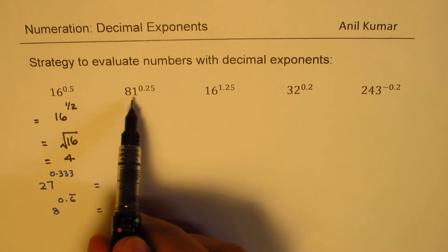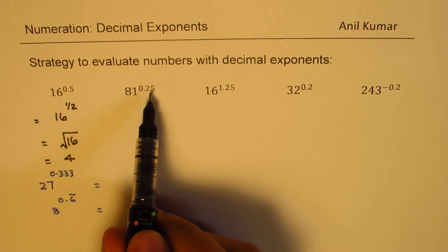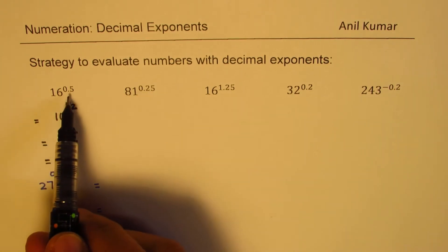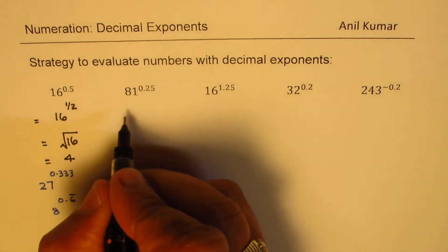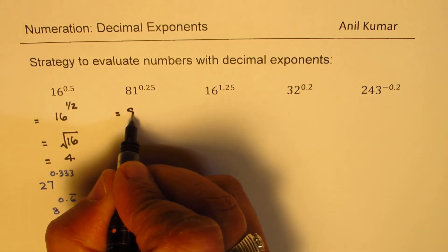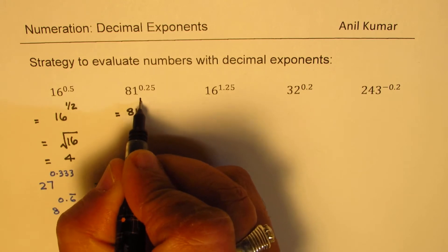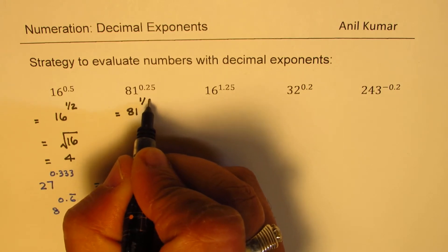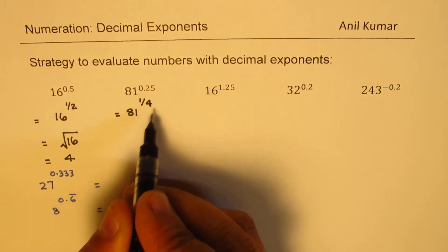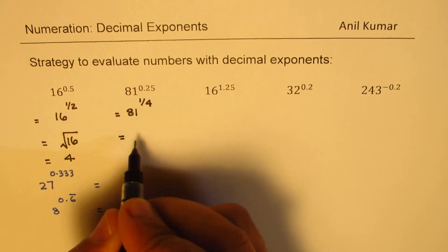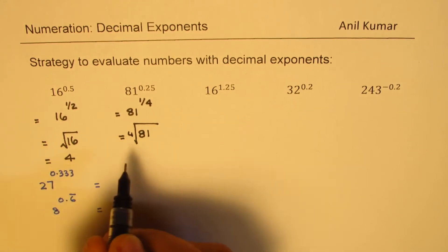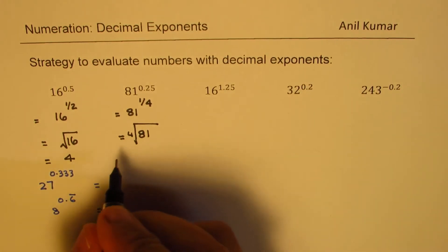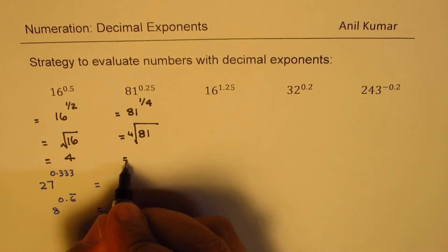Similarly, for 81 to the power of 0.25: 0.25 is a quarter, so this can be written as 81 to the power of 1 over 4, which means the fourth root. So we want to find what is the fourth root of 81.